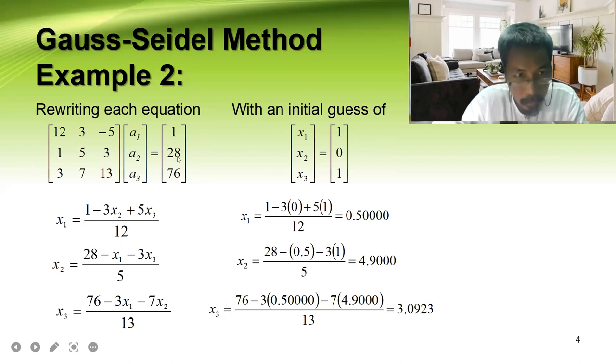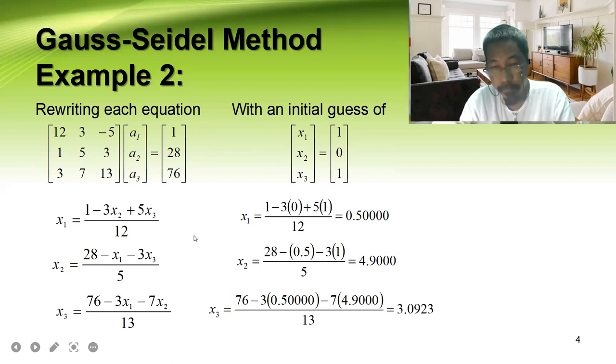For the second equation, also, this will become negative, this will become negative. So this will become negative x1 and this will become negative x3, divided by 5.